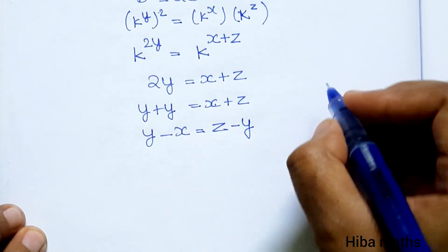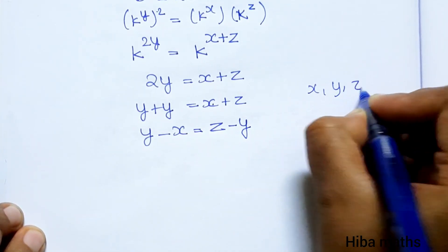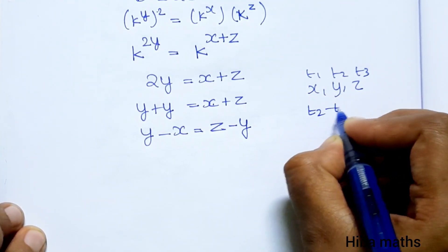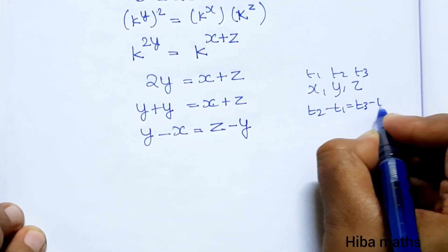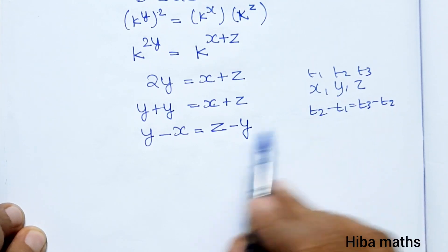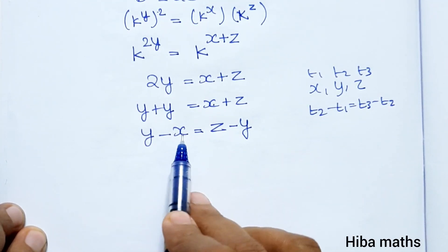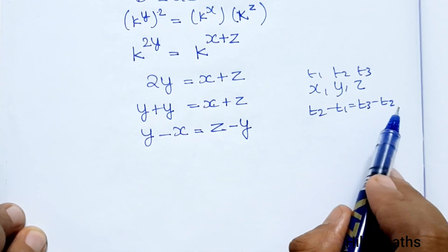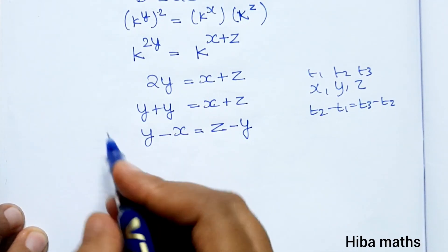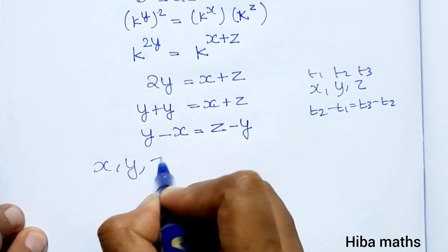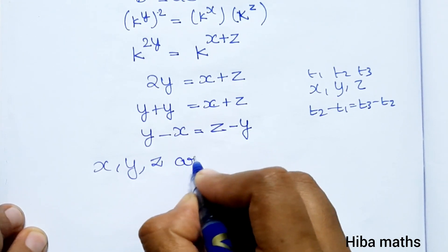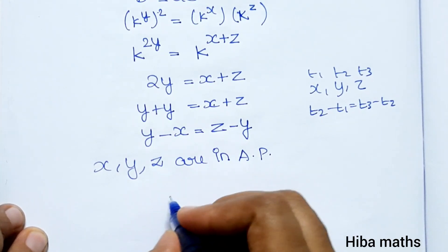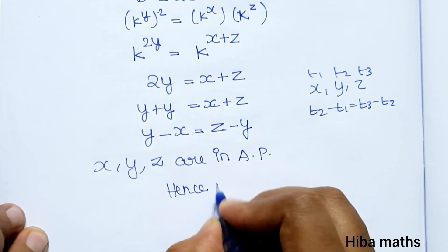This is the AP condition. For x, y, z to be in AP: t2 minus t1 equals t3 minus t2, i.e., y minus x equals z minus y, which gives 2y equals x plus z. Hence proved: x, y, z are in arithmetic progression.